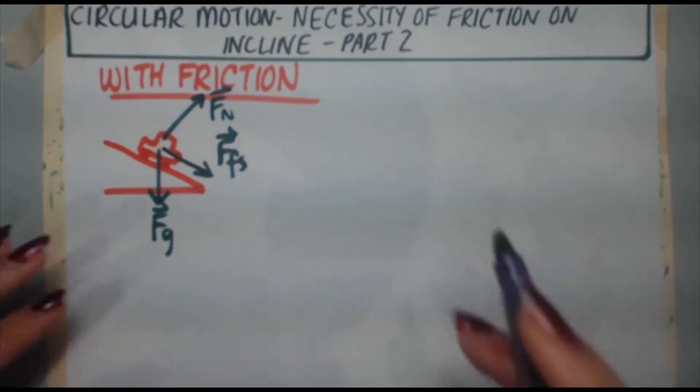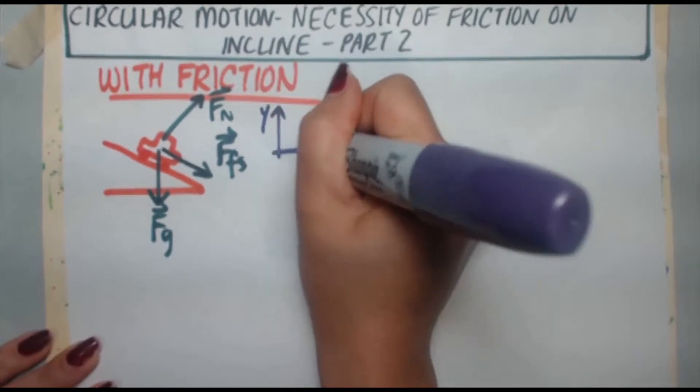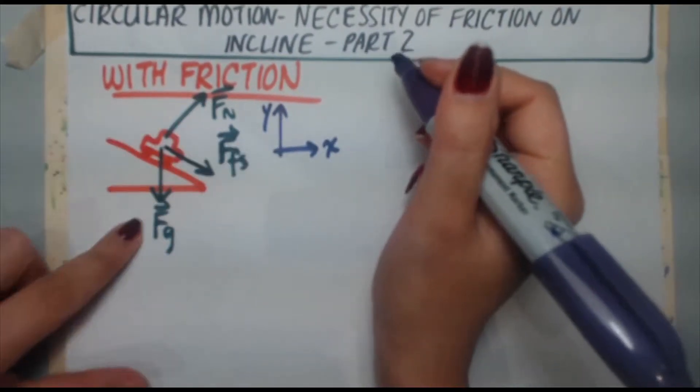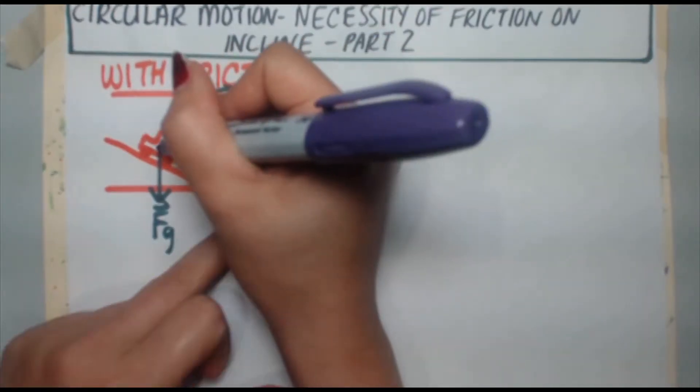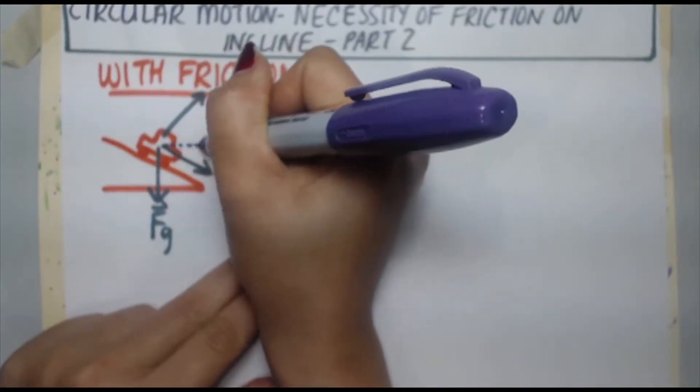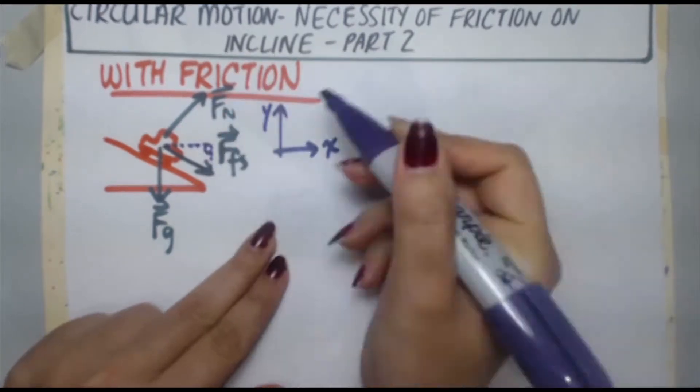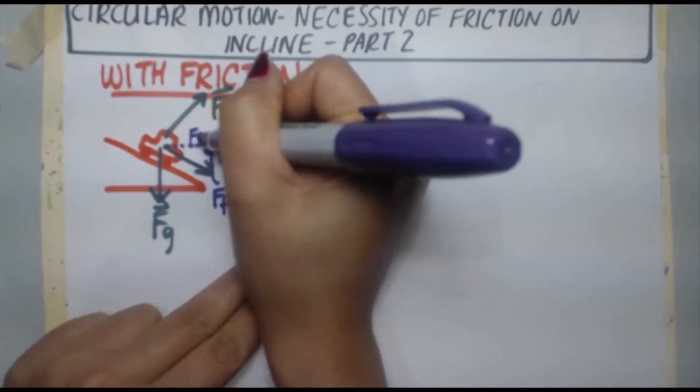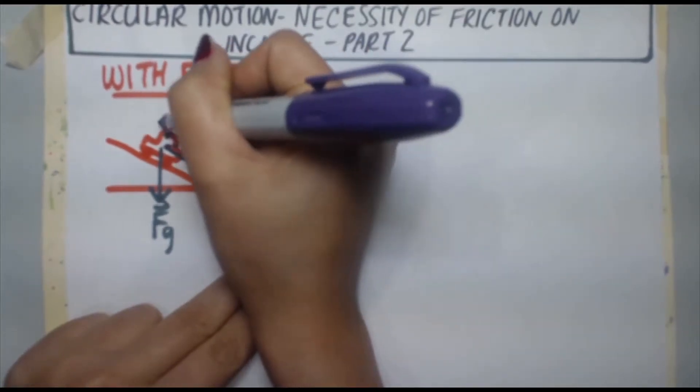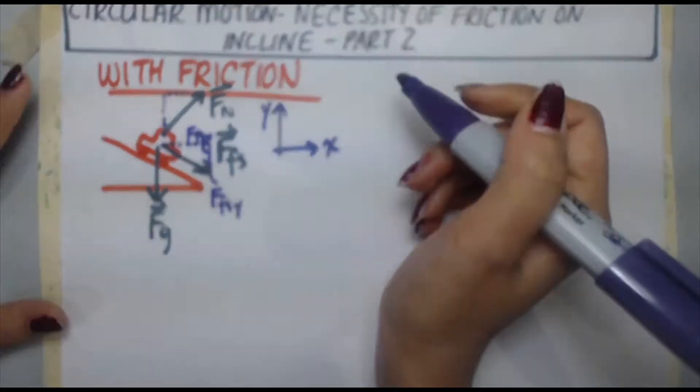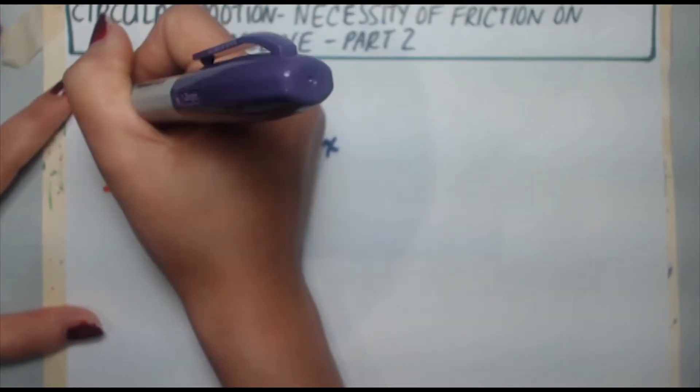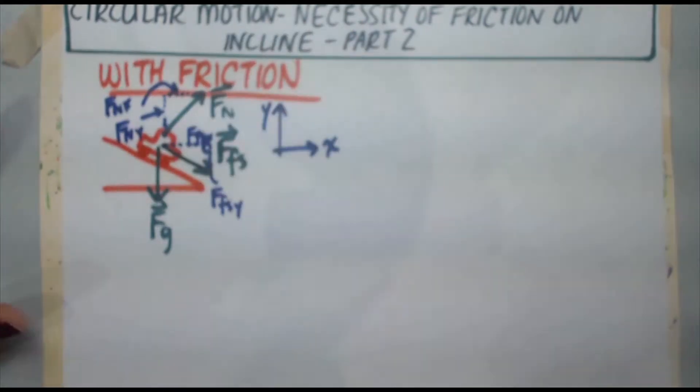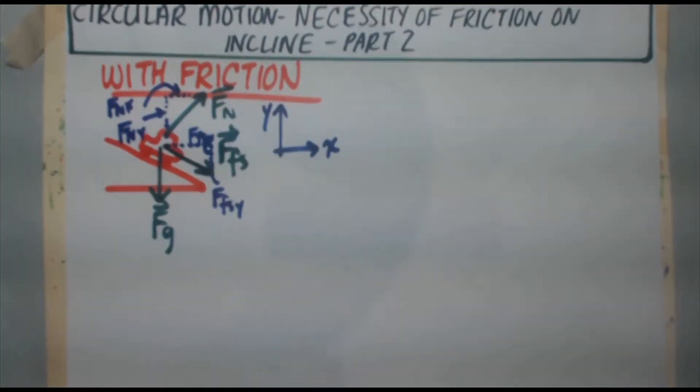Just like in the previous problem, I'm going to let up be positive y, to the right be positive x, which means I have to break this up into components. So FFS has an x component and a y component. That side there is going to be FFS y, and this side FFS x. Same with the normal force. It has a y component and an x component. The x component is Fnx, and the y component, Fny.